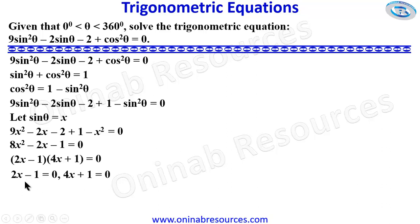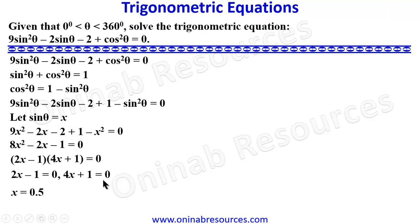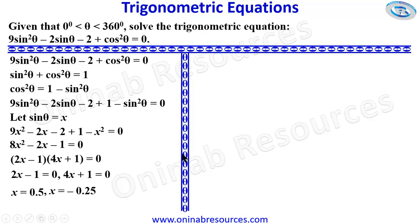Solving each factor: from 2x - 1 = 0, x = 0.5. From 4x + 1 = 0, bringing the 1 to the right gives x = -1/4 = -0.25. So we have x = 0.5 and x = -0.25. We then substitute back sinθ for x.